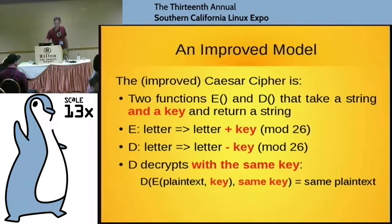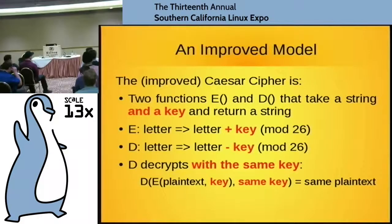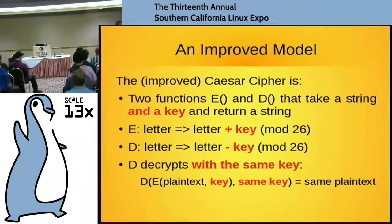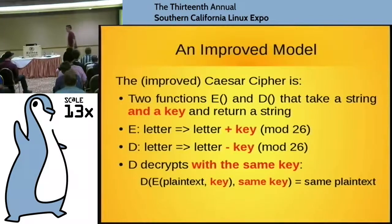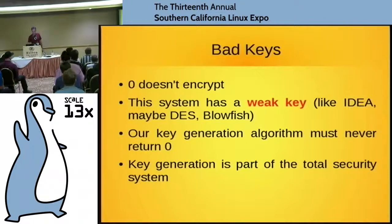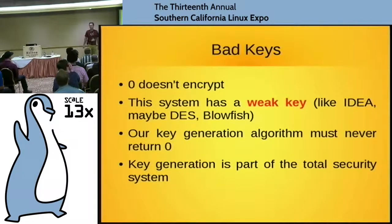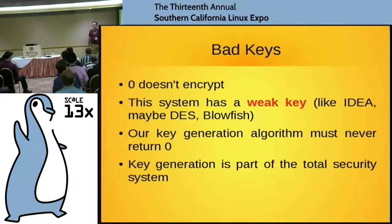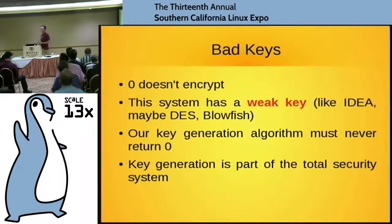Here's what happens when we improve the Caesar cipher. They're just functions like before, but they also take a key. To encrypt and decrypt, we simply add and then subtract this key, modulo 26. We have to use the same key to decrypt that we used to encrypt. Now, there is one interesting feature of this model: zero doesn't actually encrypt anything — it has a weak key. But we just make sure we never generate the key zero. Key generation is actually a part of your total security package, even if it's not exactly part of the cryptosystem.